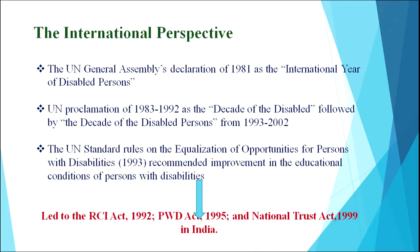The next international initiative was the UN General Assembly's declaration of 1981 as the International Year of Disabled Persons, followed by the UN Proclamation of 1983 to 1992 as the Decade of the Disabled, and then a further Decade of Disabled Persons from 1993 to 2002. The next important initiative was the UN Standard Rules on the Equalization of Opportunities for Persons with Disabilities 1993, which recommended improvement in the educational conditions of persons with disabilities, and which led to the RCI Act, PWD Act, and National Trust Act.